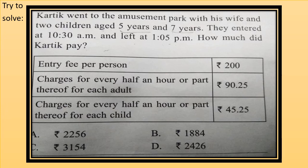Now entry fee per person is 200. Charges for every half an hour or part thereof for each adult is equal to 90.25. Charges for every half an hour or part thereof for each child is 45.25 rupees. So we have to calculate how much did Karthik pay? So first we have to calculate the time they spent in the amusement park. And according to calculate the charges he will pay.